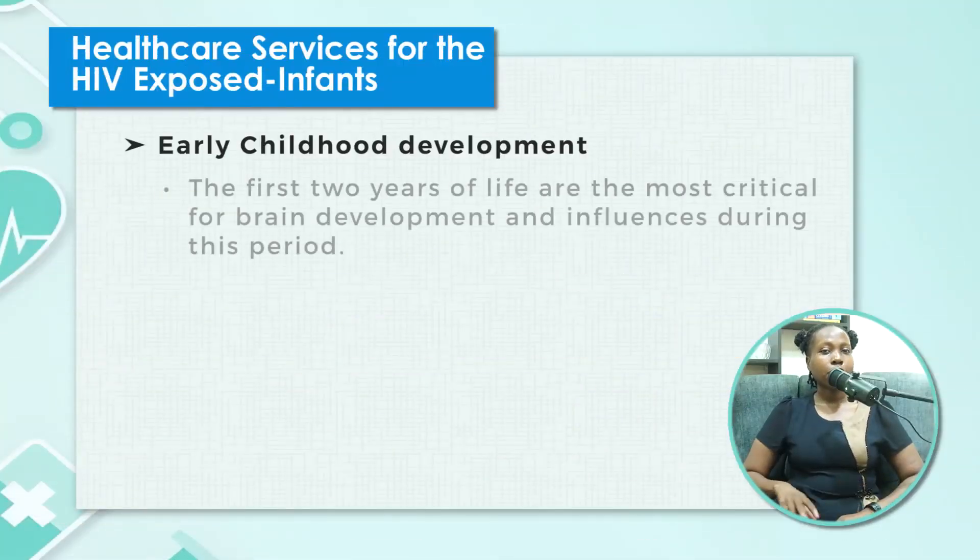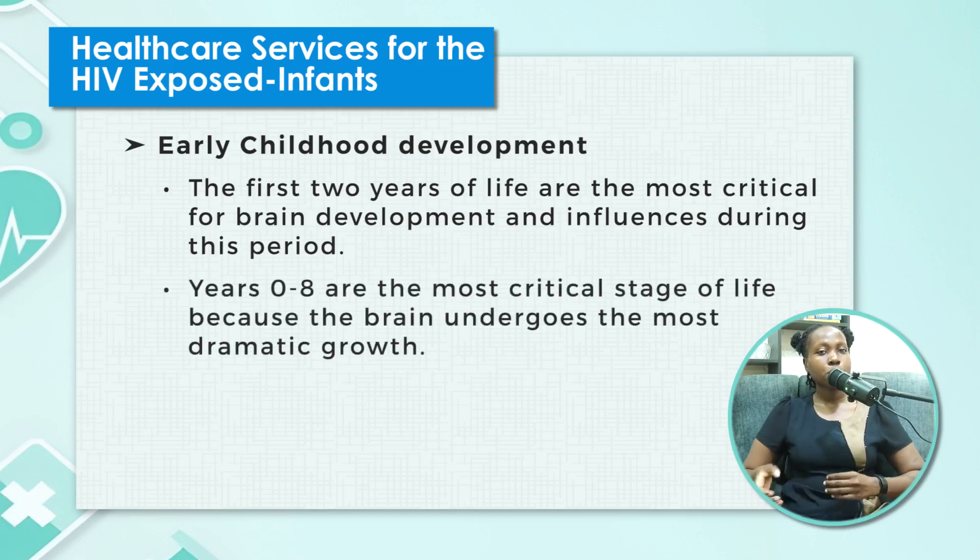Early childhood development is critical. The first two years are very crucial — between zero and two years, a child's brain is picking up most of the things they will use in life. Illness can cause these children to fall behind. Ensure they receive the right nutrition, and that mothers maintain high levels of personal hygiene. Educate mothers regarding the importance of adherence so their children can have a good quality of life. Up to the age of eight years, these children should have the right nutrition and visit the clinic regularly, with visits scheduled alongside their immunizations.